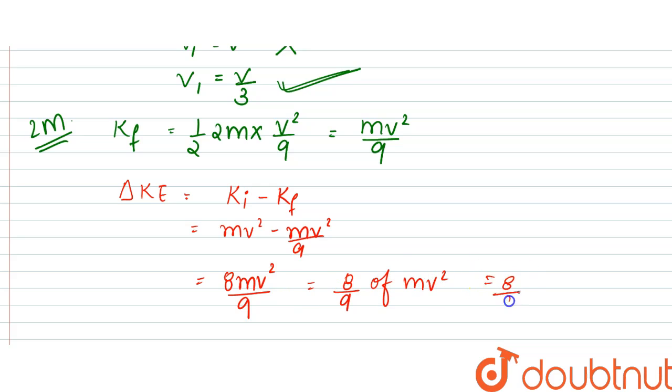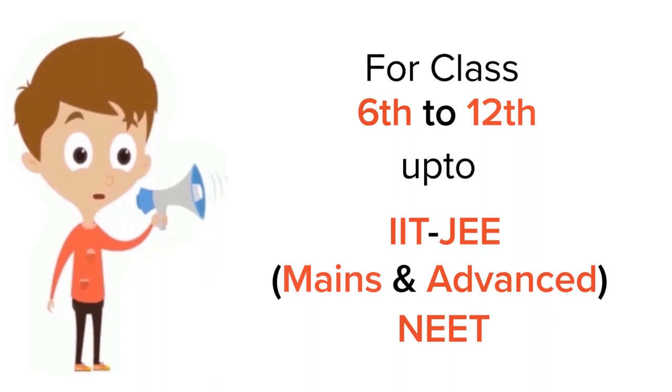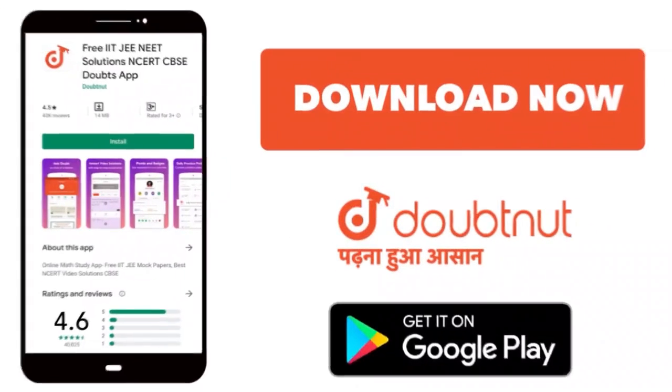that is equal to 8/9 of initial kinetic energy. Right, so our answer would be 8/9 of its initial kinetic energy, that is option D. Thank you. For class 6 to 12, IIT, JEE, and NEET level, trusted by more than 5 crore students, download Doubtnet app today.